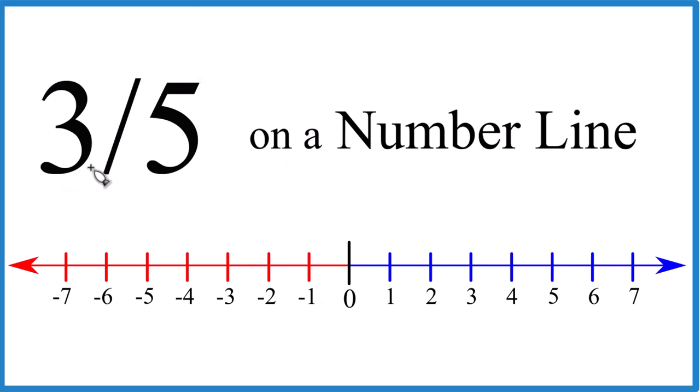So first off, 3 fifths, that's a positive number. You don't see a negative in front of it, it's a positive number. That means it's going to be over here on our number line.